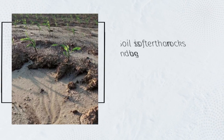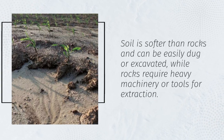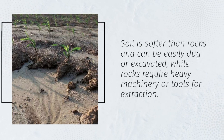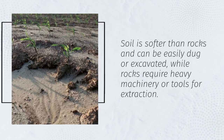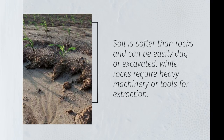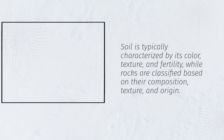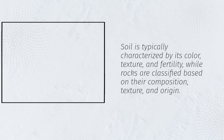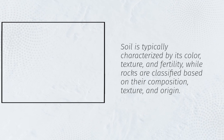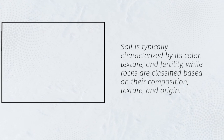Soil is softer than rocks and can be easily dug or excavated, while rocks require heavy machinery or tools for extraction. Soil is typically characterized by its color, texture, and fertility, while rocks are classified based on their composition, texture, and origin.